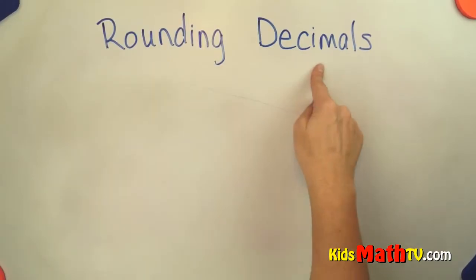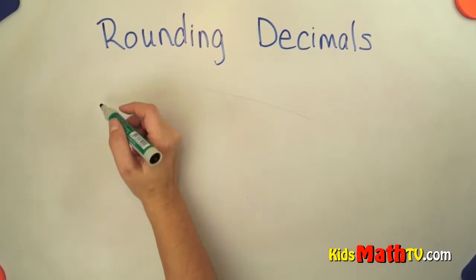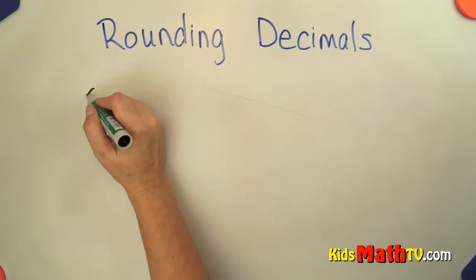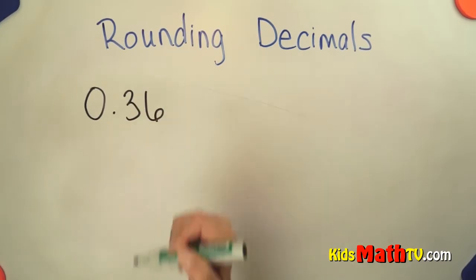In this lesson, you will learn about rounding decimals. So rounding decimals, if we have a decimal such as 0.36 (0 and 36 hundredths),